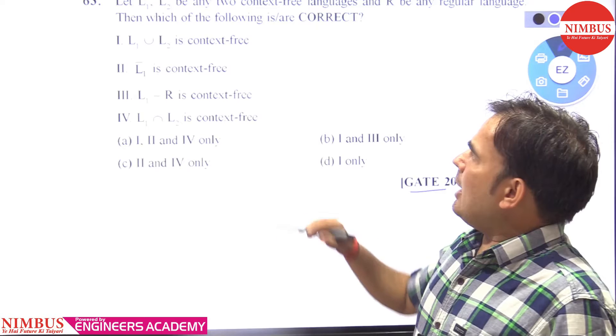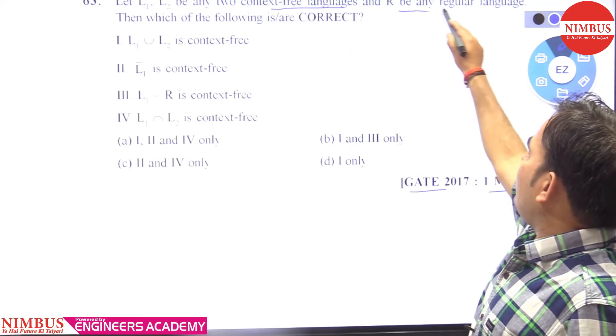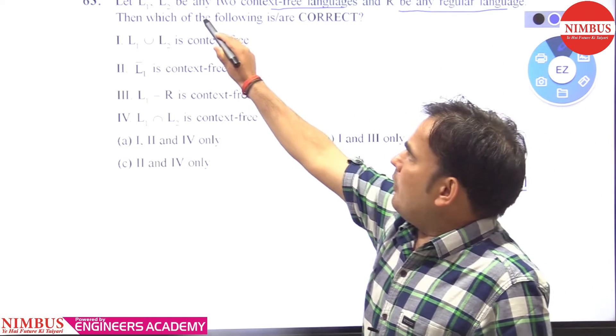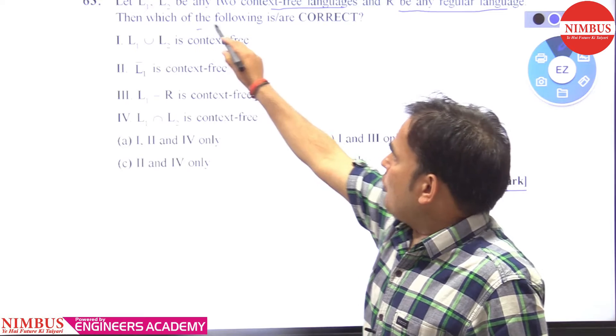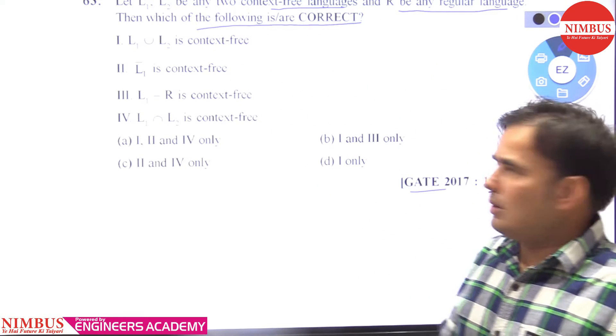What it is saying: let L1, L2 be any two context free languages and R any regular language, then which of the following is/are correct?